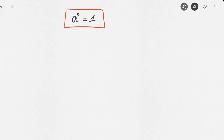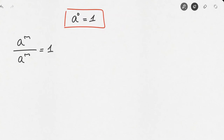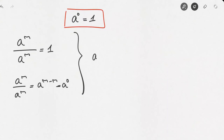Here's why: consider a non-zero number a raised to the power of m divided by a to the power of m — the same power in numerator and denominator. We know this equals 1, since any number divided by itself equals 1. But using the second law of exponents, a^m divided by a^m also equals a to the power of m minus m, which is a to the power of 0. Combining both results, a to the power of 0 equals 1. And there you go — those are the first few fundamental laws of exponents.